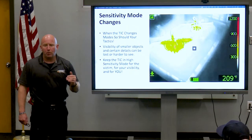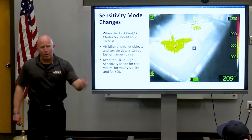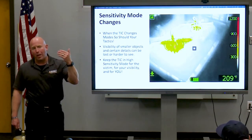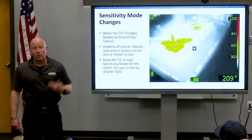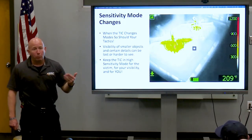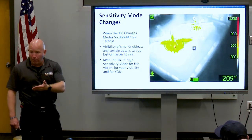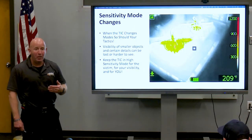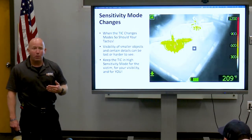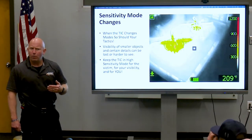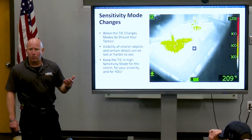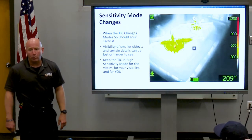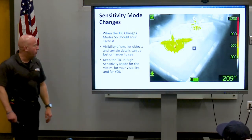If the victim is alive or just recently deceased, they are known as an active emitter. Their body is trying to regulate temperature naturally, so they will show up dark unless they're buried under something. If they've been dead a while, how are they going to show up if they're not regulating temperature anymore? They're going to blend in with the background because they're simply a sponge.